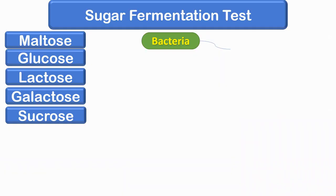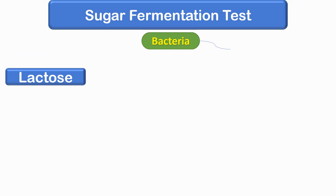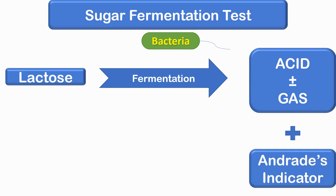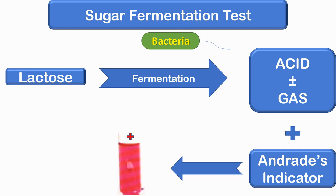Moving on to the sugar fermentation test: some bacteria are selective in their preference for sugar utilization, which can help differentiate them from each other. We grow the bacteria in the presence of one particular sugar, for example lactose. Lactose-fermenting bacteria will produce acid with or without gas formation, turning the pH acidic and changing the color of the media. The Andrade's indicator changes the color of the media to pink in the presence of acid. Gas formation is detected by the presence of bubbles in the inverted Durham tube. Non-lactose-fermenting bacteria show no color change.